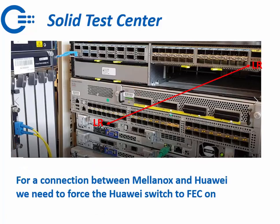If we want to make a connection between the Mellanox and the Huawei, we need to manually enable FEC on the Huawei switch. By default, Huawei with an LR optic will switch FEC off, but since the Mellanox always has FEC on, we must turn it on at the Huawei side to establish the link.